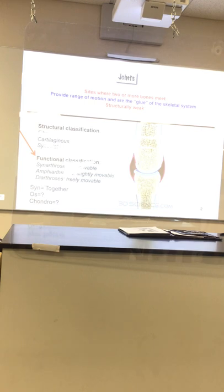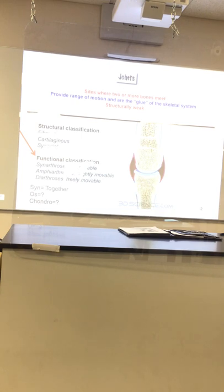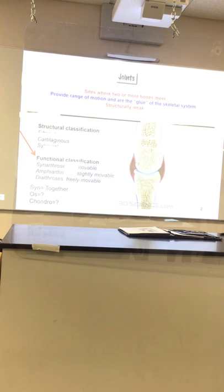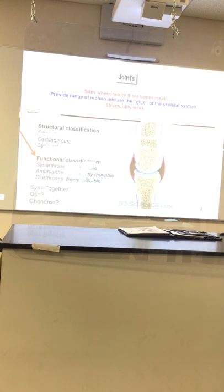Synovial joints are the free-moving joints of the body. You've got a joint capsule on either side, articulated cartilage between the two — look what you can do. These are all synovial joints; they're free-moving. Cartilaginous joints have a little give in the lower back — your vertebrae.